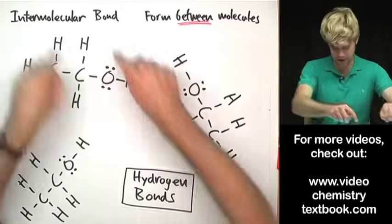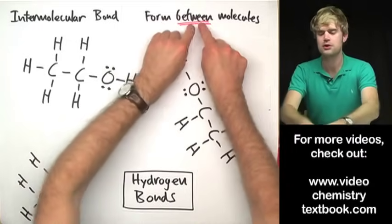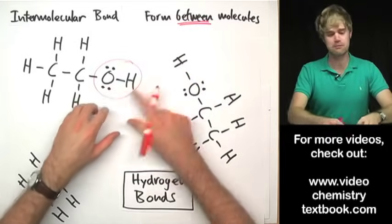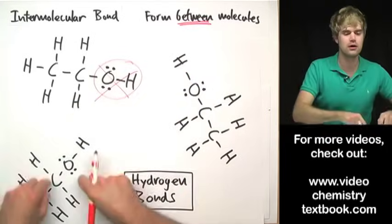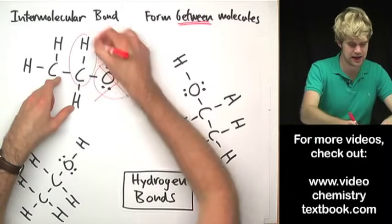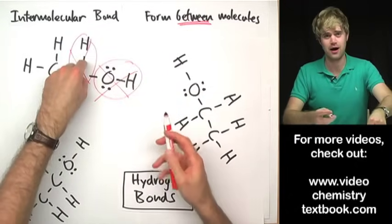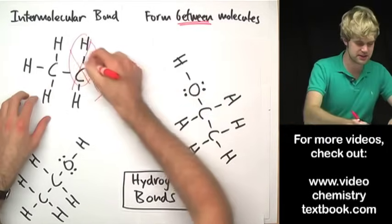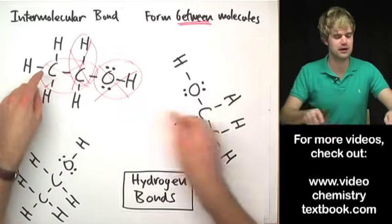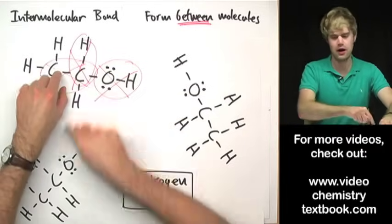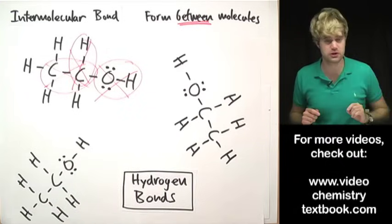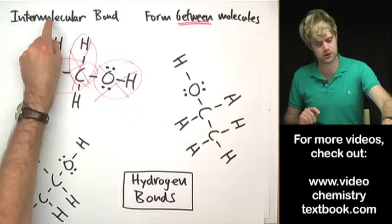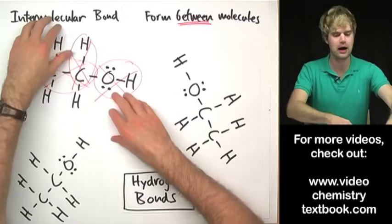Intermolecular bonds — hydrogen bonds — form between molecules. So a bond within the same molecule can't be a hydrogen bond. The C-H bond can't be a hydrogen bond because it's in the same molecule, not between molecules. The C-C bond can't be a hydrogen bond either, for the same reason. If a bond is in just one molecule, it's not an intermolecular bond and it's certainly not a hydrogen bond.